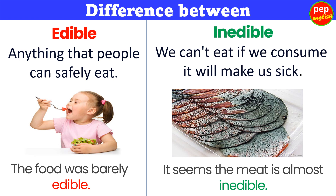Difference between edible and inedible. Edible refers to anything that people can safely eat. Example: The food was barely edible. Inedible means we can't eat it — if we consume it, it will make us sick. Example: It seems the meat is almost inedible.